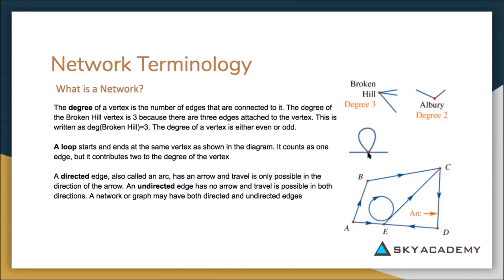But if you have a look at the node, it has one, two, three, four lines coming out of it, which means it has a degree of four. So although the loop is only one edge, it will count as two degrees.